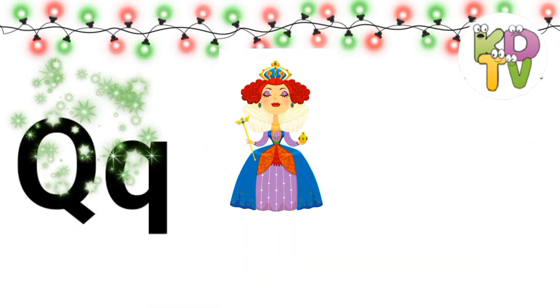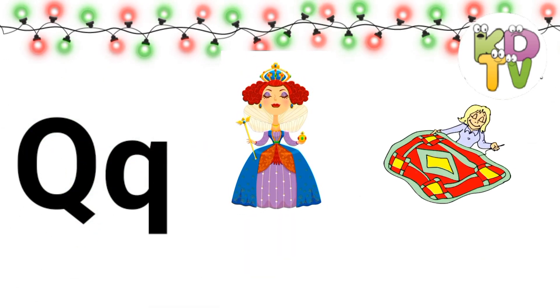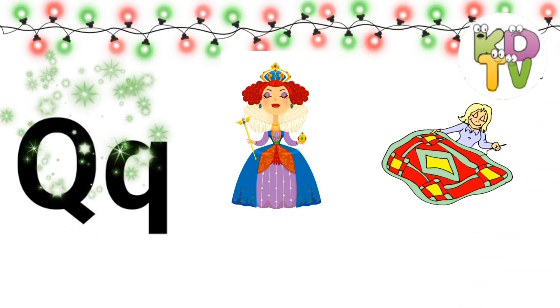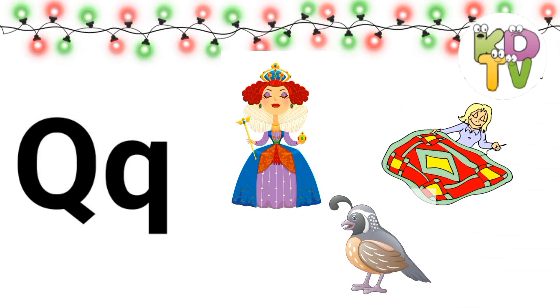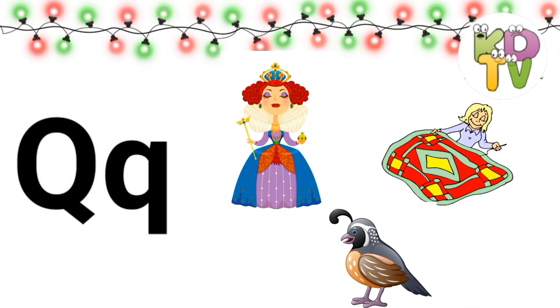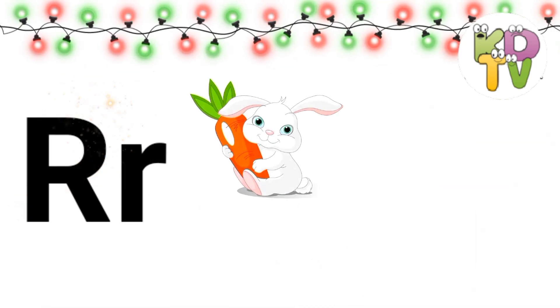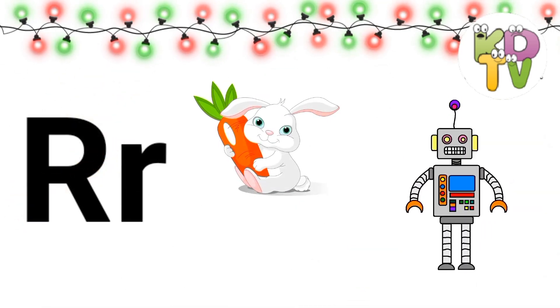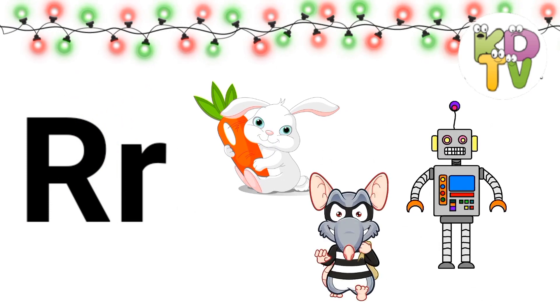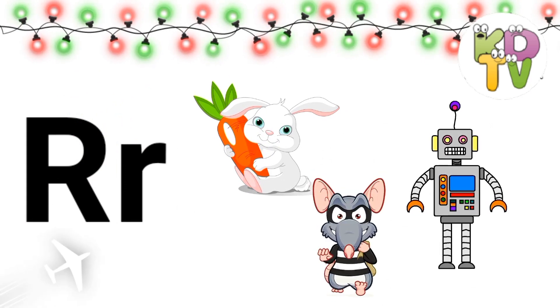Q is for Quill, Quack. R is for Rabbit, Robot, Rack.